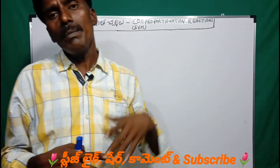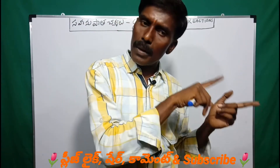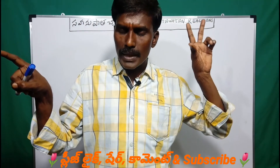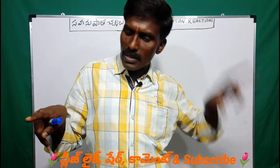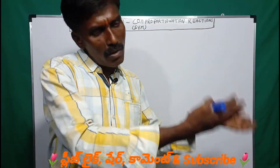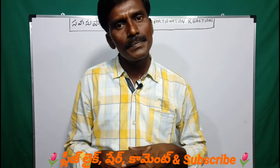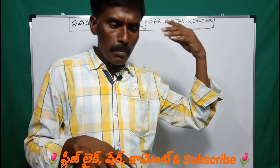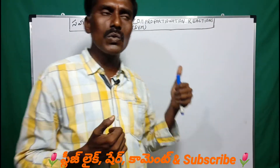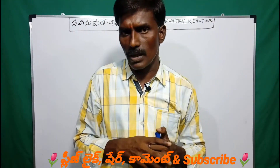On the reactant side there is one element; on the product side there are two elements. In symproportionation reactions, the reactant side has two oxidation states and the product side has one oxidation state. Three oxidation states are compulsory in symproportionation reactions.